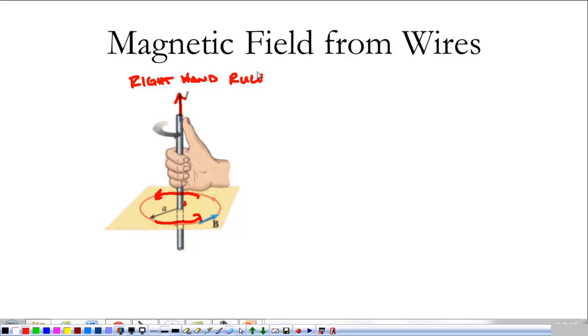If you take your right hand and curl your fingers, or you point your thumb in the direction of the current and curl your fingers around the wire, the direction that the fingers of your right hand curl tell you the direction of the magnetic field around that wire. And we'll talk about how to calculate that a little bit later.